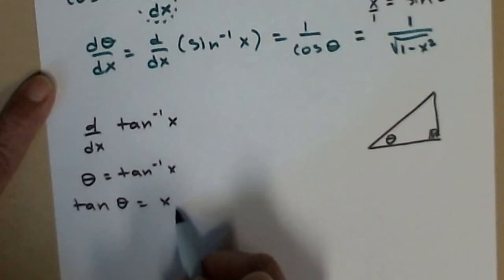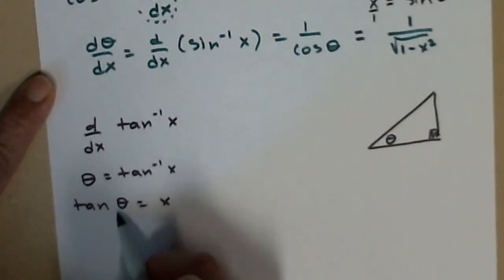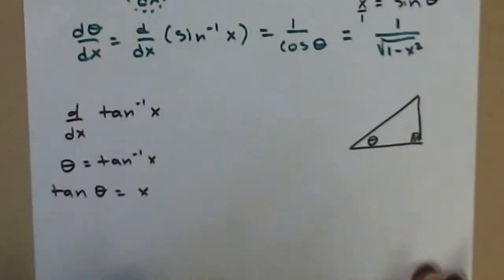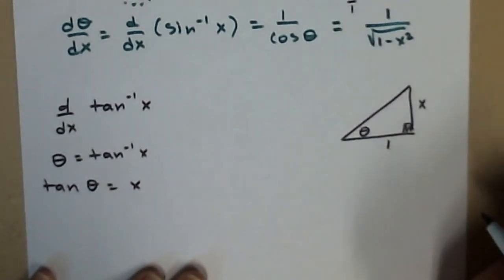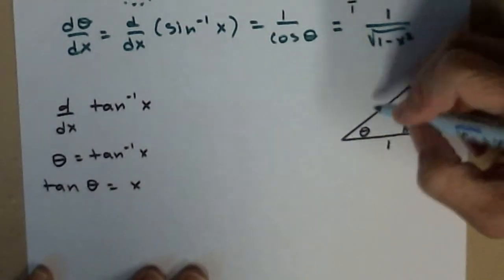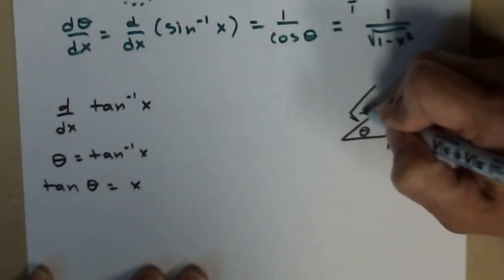I'll take the tangent of both sides so that I can get my x out from that inverse tangent function. Only true for a given interval, but we could work on that later. So here's my theta. Now I need to label my sides so that the tangent of the angle I've drawn is x over 1. Tangent is opposite over adjacent. Pythagorean theorem gets me the missing side.